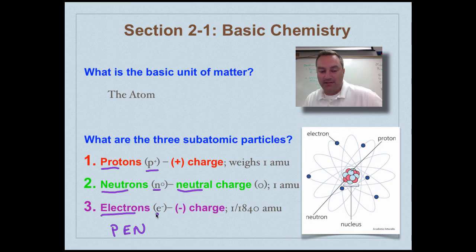Electrons, e- is the symbol for them. They have a negative charge and these guys have so little mass they are 1/1840th of an atomic mass unit. So for all intents and purposes, think of an electron as having basically no mass.